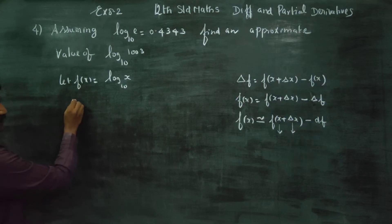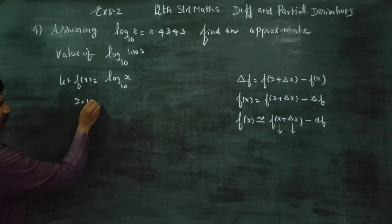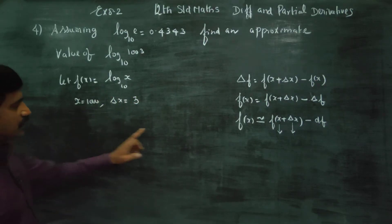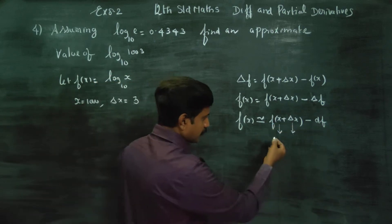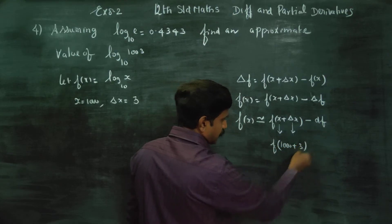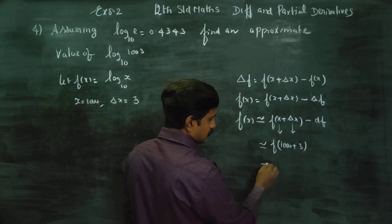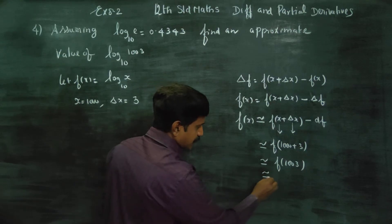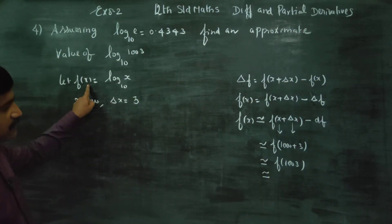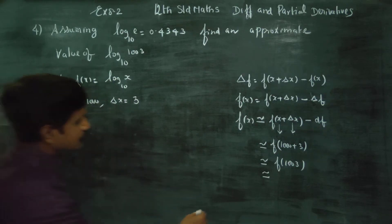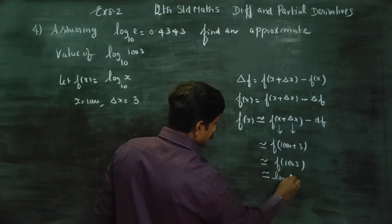I am going to choose x as 1000 and a small increment delta x as 3. Then f of 1000 plus 3 is approximately equal to f of 1003. So f of 1003 is log 1003 base 10.